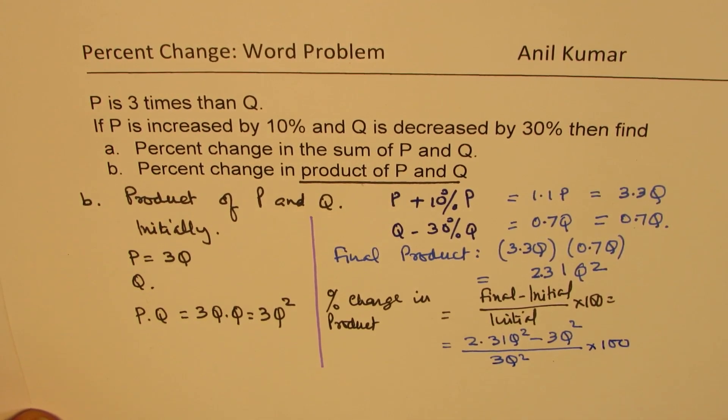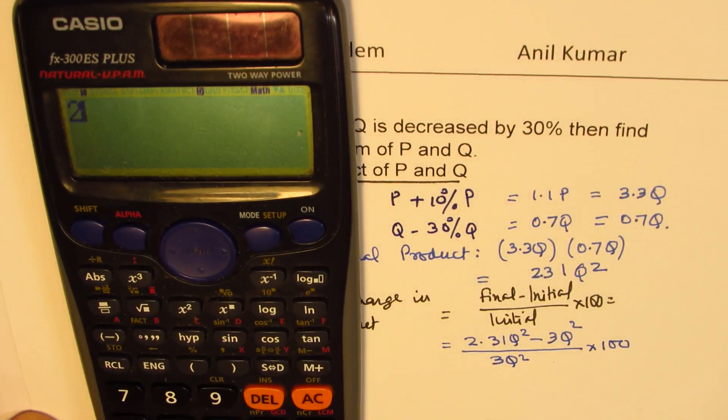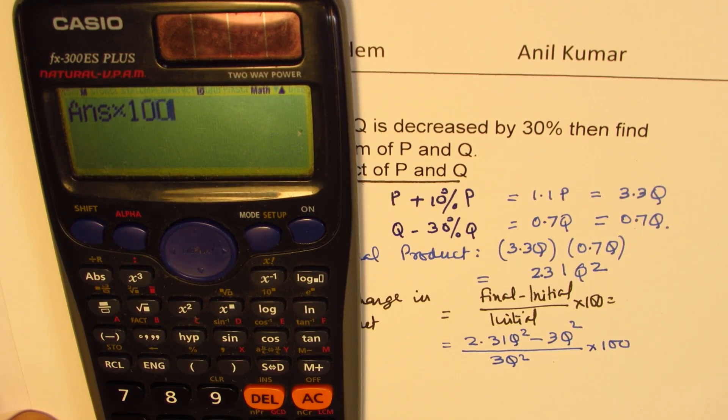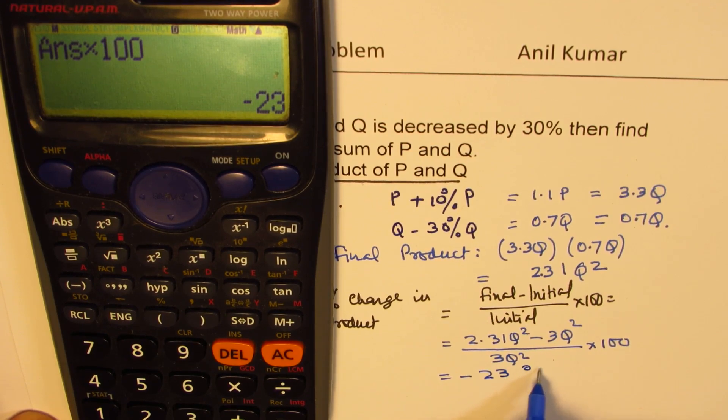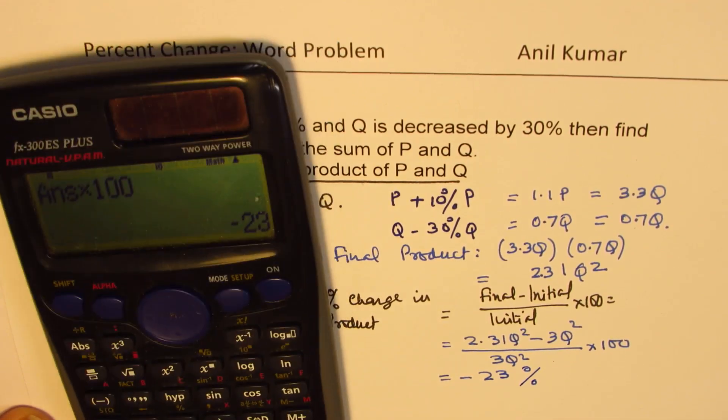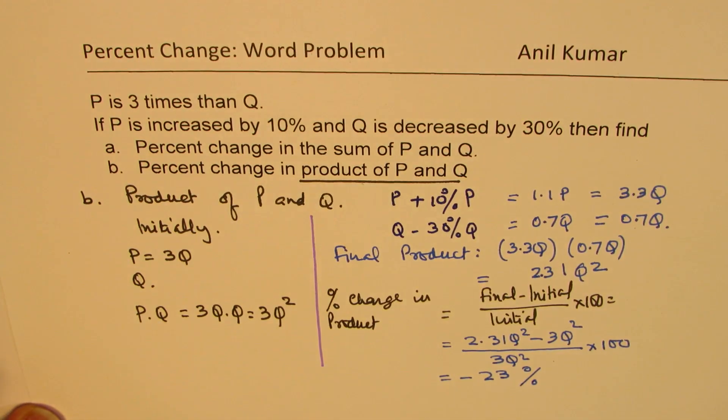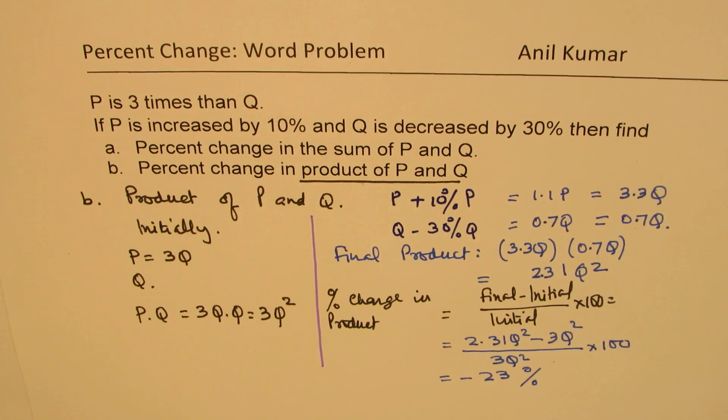We can use the calculator to calculate this value. We have 2.31 minus 3 equals 2 divided by 3 equals 2 times 100. So we get a change which is negative. So minus 23%. So that becomes the percentage change in the value of product of P and Q.